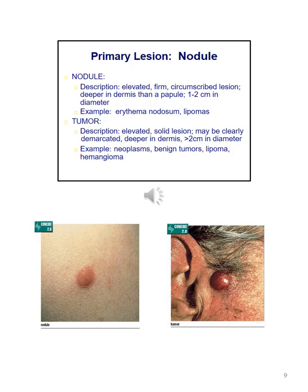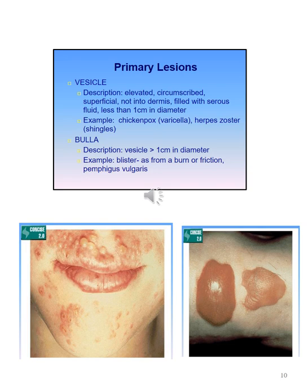A tumor is an elevated solid lesion which may be clearly demarcated, deeper in the dermis, more than two centimeters in diameter. Examples include neoplasms, benign tumors, lipoma, and hemangioma. A vesicle is elevated, circumscribed, superficial, not into the dermis, and filled with serous fluid less than one centimeter in diameter. Examples are chickenpox and herpes zoster.